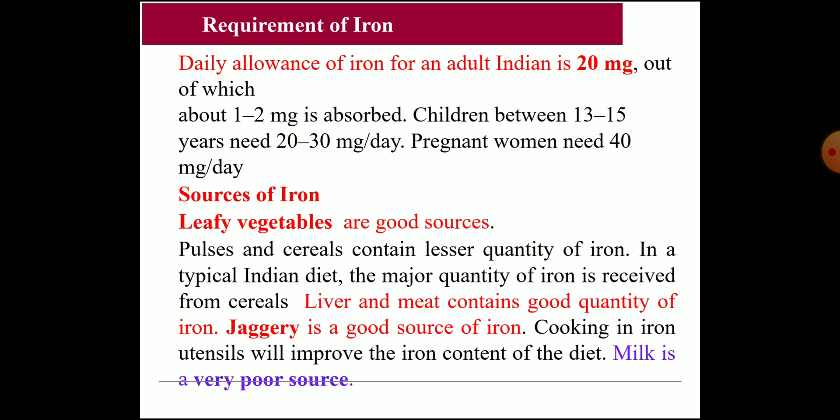What are the requirements of iron? The daily requirement for an adult Indian is 20 mg, out of which only about 1 to 2 mg will be absorbed — that is only 10% of total consumption. Children between 13 and 15 years need 20 to 30 mg per day, and pregnant women need around 40 mg per day.